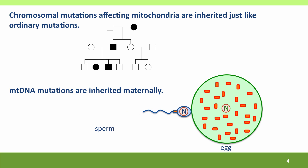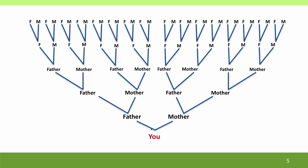Both eggs and sperm have mitochondria, but the sperm mitochondria serve only to function as a power source for sperm swimming. Only the sperm nucleus enters the egg — the sperm mitochondria remains outside. Your mitochondrial DNA came to you from your mother, whether you're male or female. She got her mitochondrial DNA from her mother, who got it from her mother, who got it from her mother.